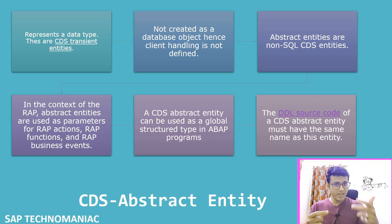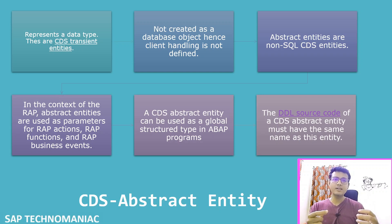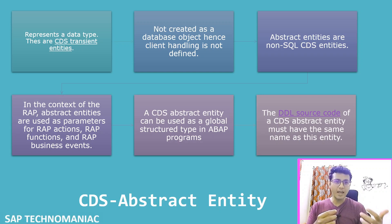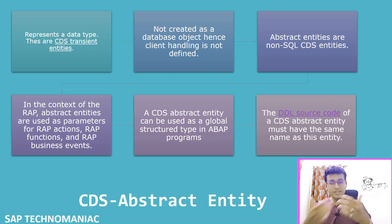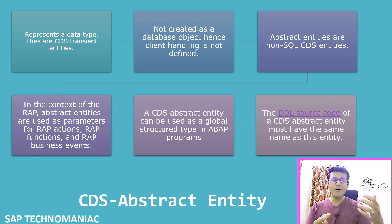We can use the normal structure type as well, but sometimes we need to define a special kind of derived type — that's when we use the CDS abstract entity. It represents a data type only. Whenever we activate this particular CDS abstract entity, it will just generate the metadata.